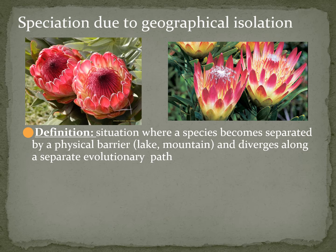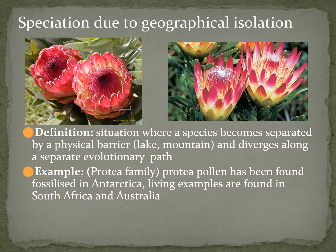What I'm looking at here is speciation due to geographical isolation — a situation where a species becomes separated by a physical barrier like a lake or mountain, and it diverges along a separate evolutionary path. An example in the photographs above is the protea family. Protea pollen has been found fossilized in Antarctica, but there are also living examples found in South Africa and Australia. The picture on the left shows protea flowers from South Africa, and those on the right are from Australia. You can see there are a lot of similarities, but they are phenotypically different, and there's a possibility they're also genotypically different, which would mean they are different species.